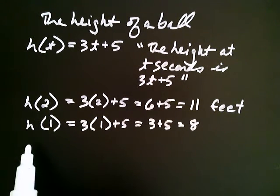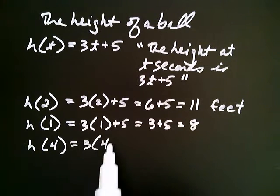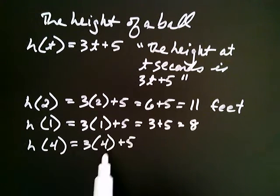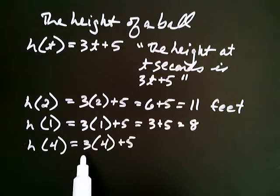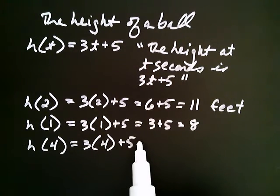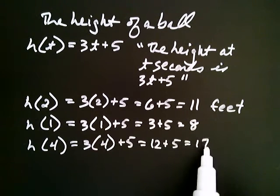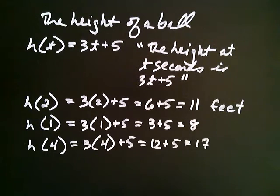One more, just to make sure we're on board. The height at 4 seconds, that would be 3 times 4 plus 5, because that's what you do with the time. You multiply it by 3 and then add 5 to it. We do that every time. 3 times 4 is 12, plus 5, which is 17 feet.